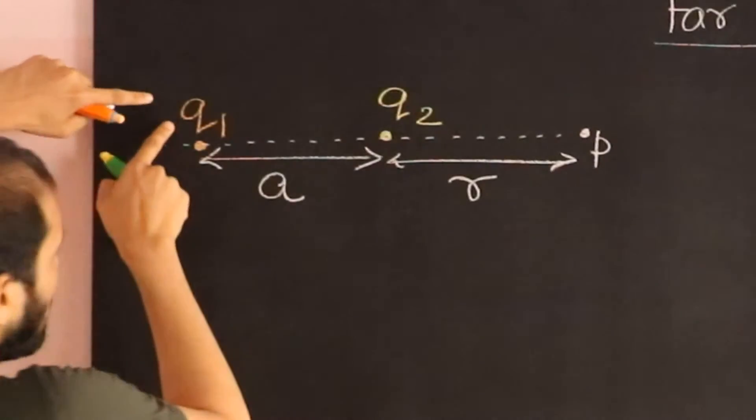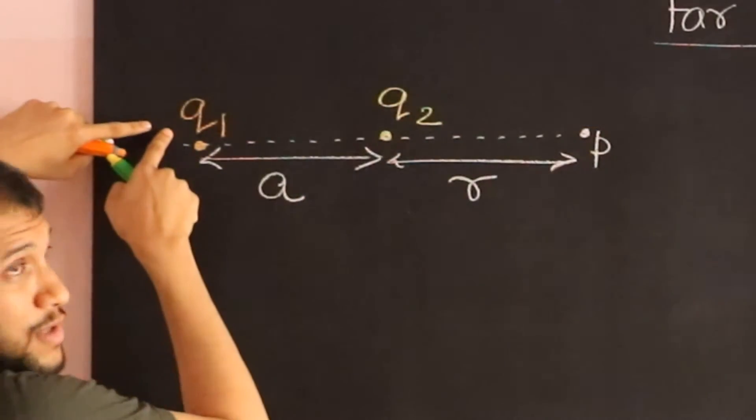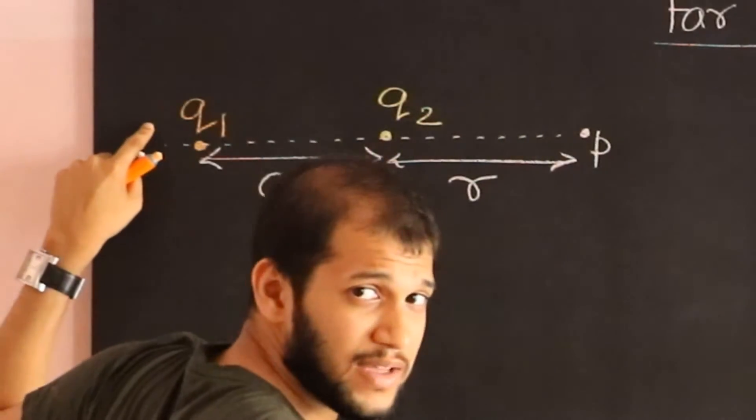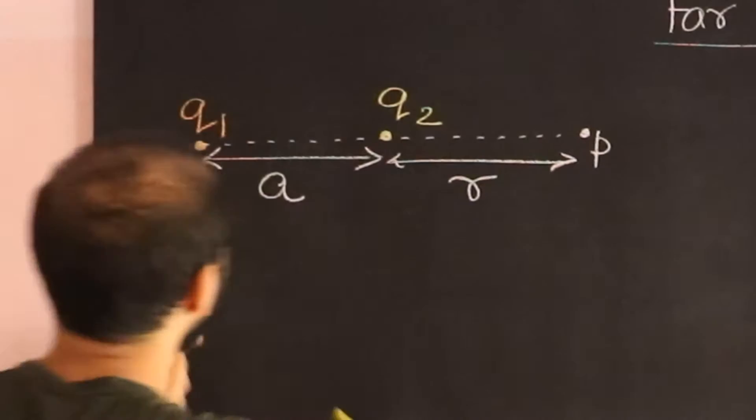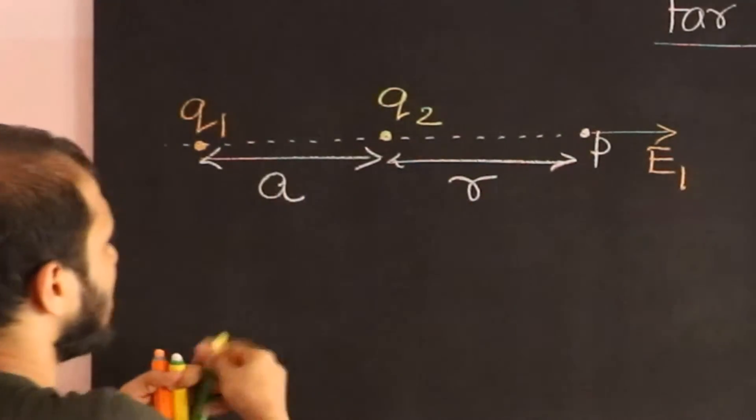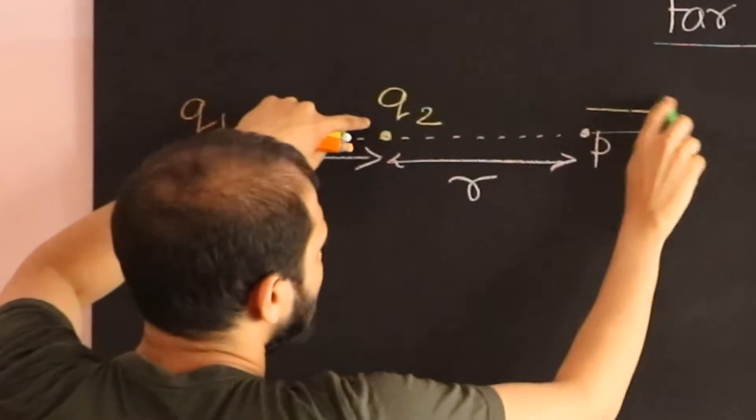This one is going to produce an electric field this way if it's a positive charge or this way if it's a negative charge. Let's assume for now that both charges are positive. Then I would get an electric field E1 and I would get an electric field due to this guy over here, E2.